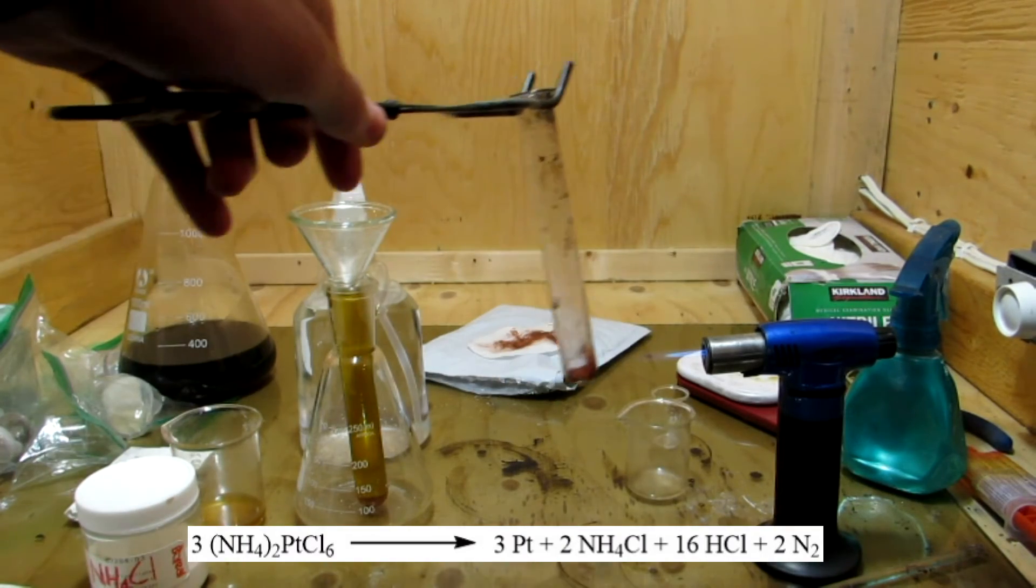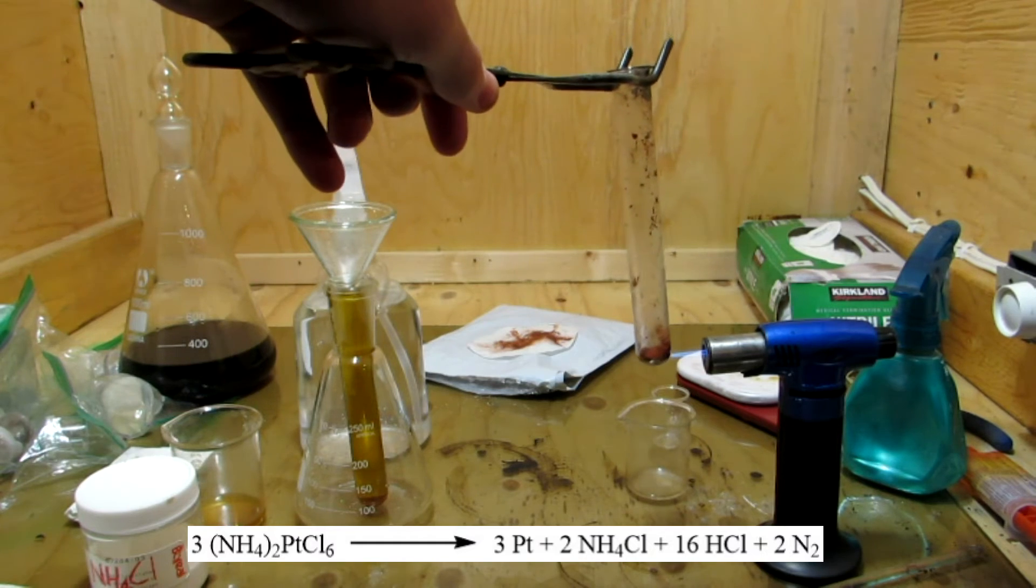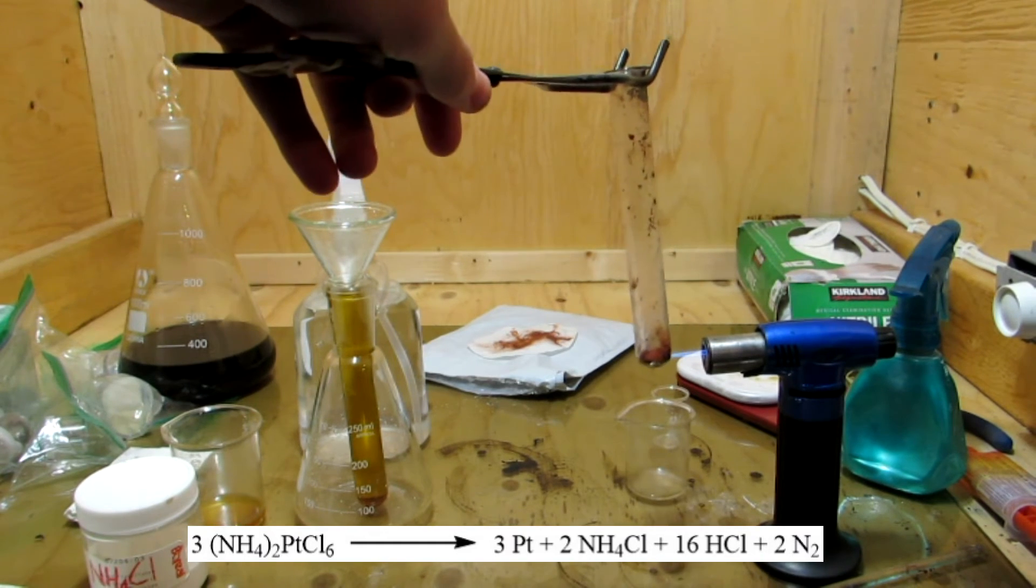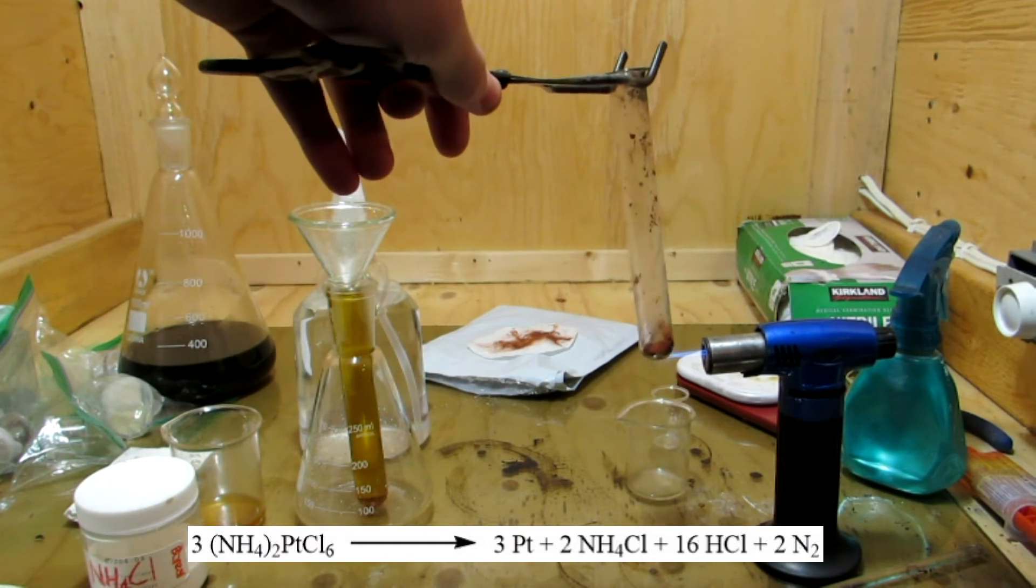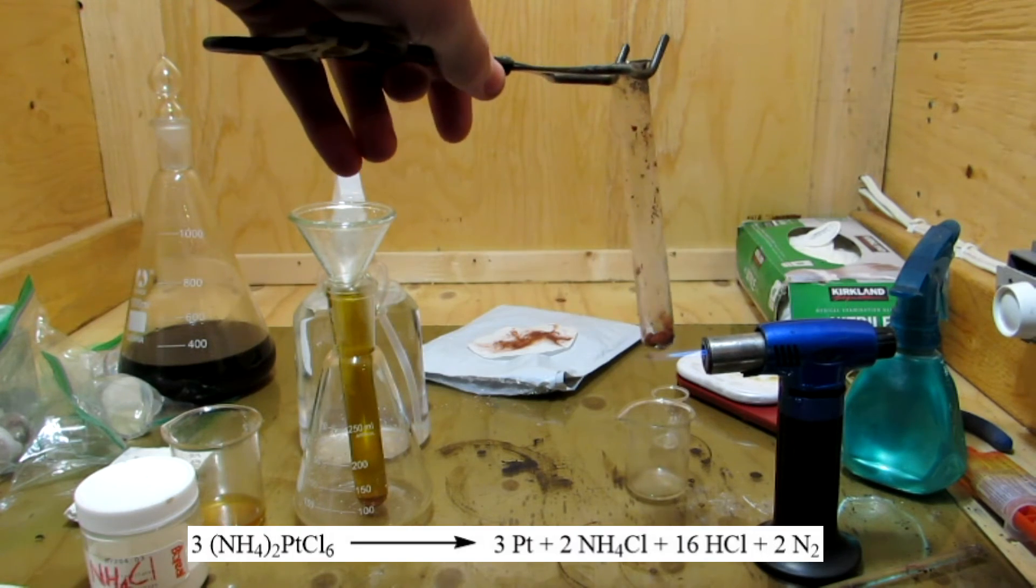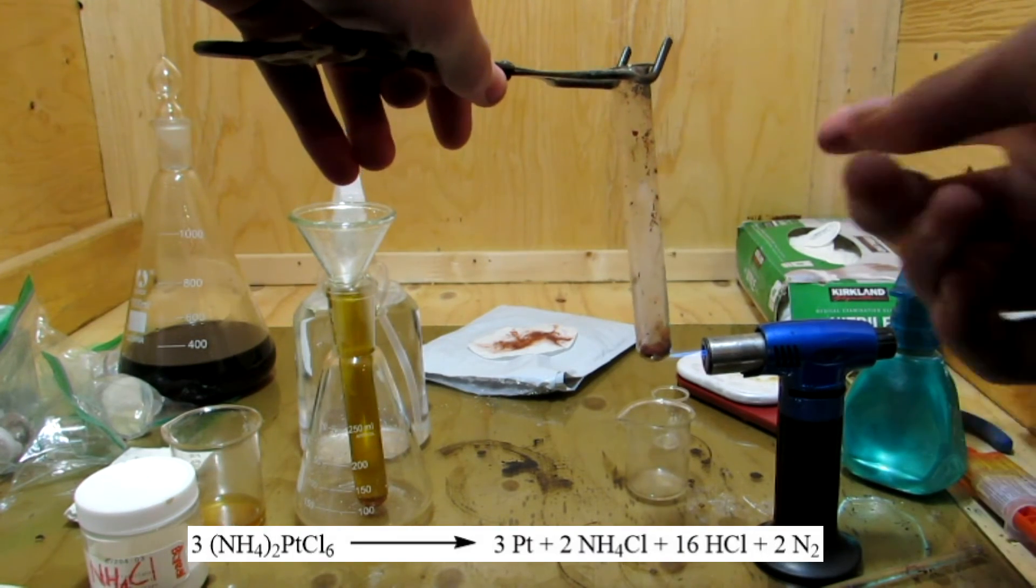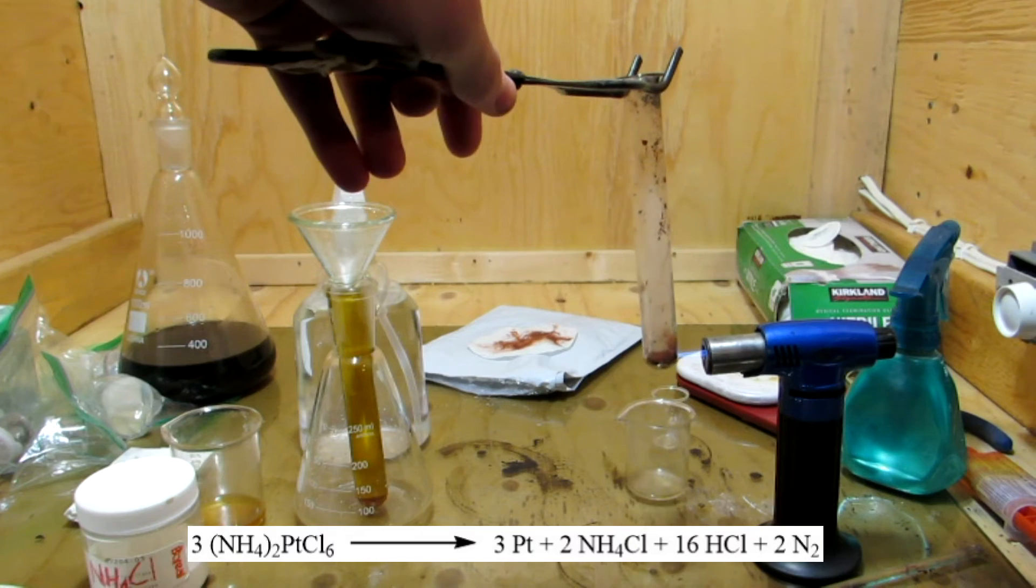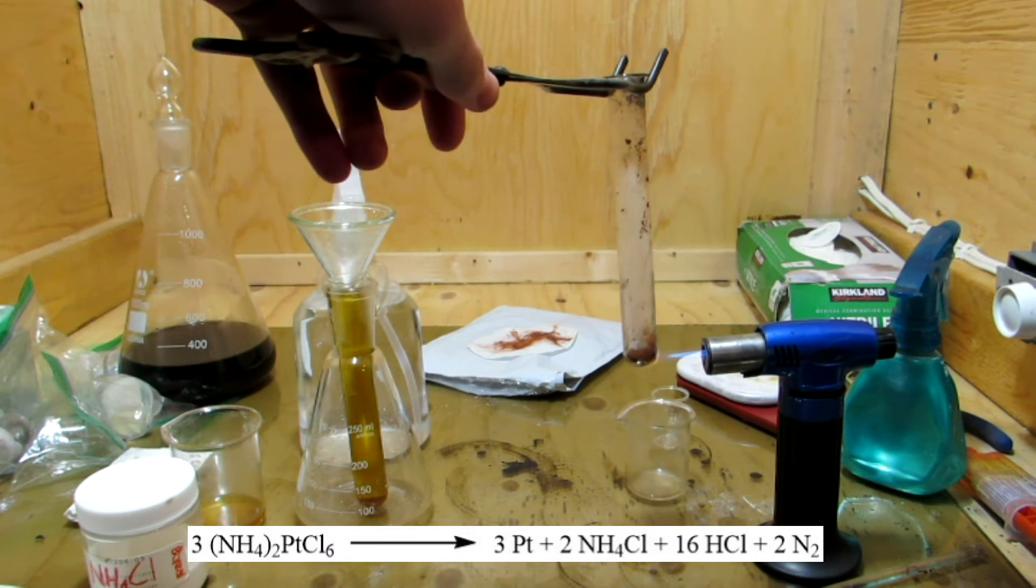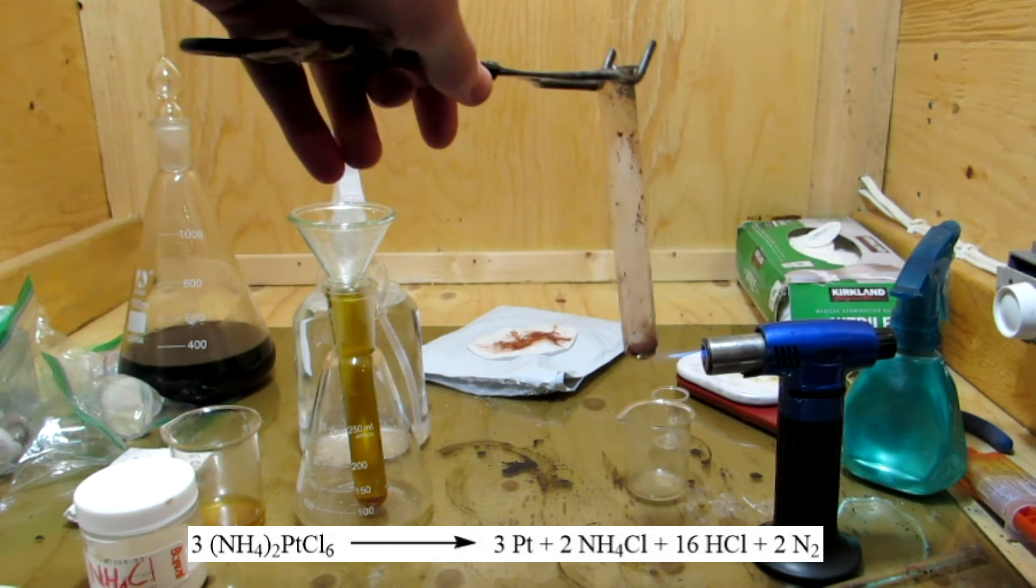The test tube was placed in a butane flame to decompose the ammonium hexachloroplatinate completely. As the ammonium hexachloroplatinate decomposes, platinum metal is produced and ammonium chloride, hydrogen chloride, and nitrogen gas escape. Hydrogen chloride is toxic and corrosive, so the decomposition must be performed in a fume hood or outside.